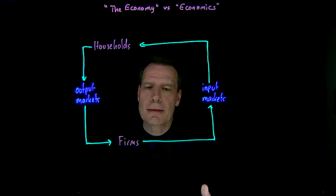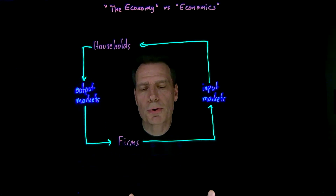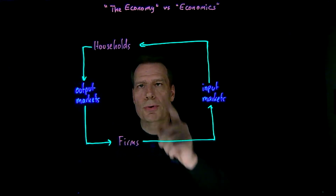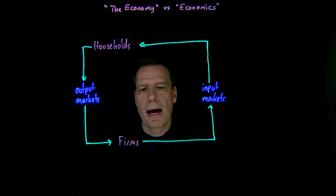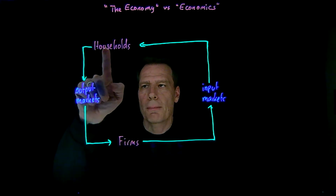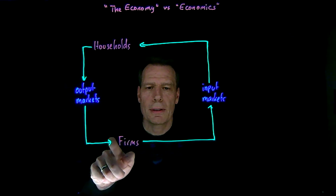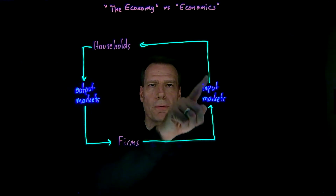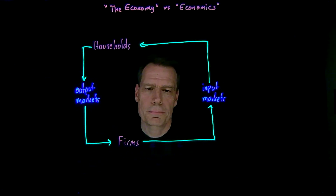This gives us the simplest possible version of what we call a circular flow diagram — a diagram that shows the circular flow of money through an economy. Households purchase goods from firms, who then purchase inputs from households, and the money flows in a circle.